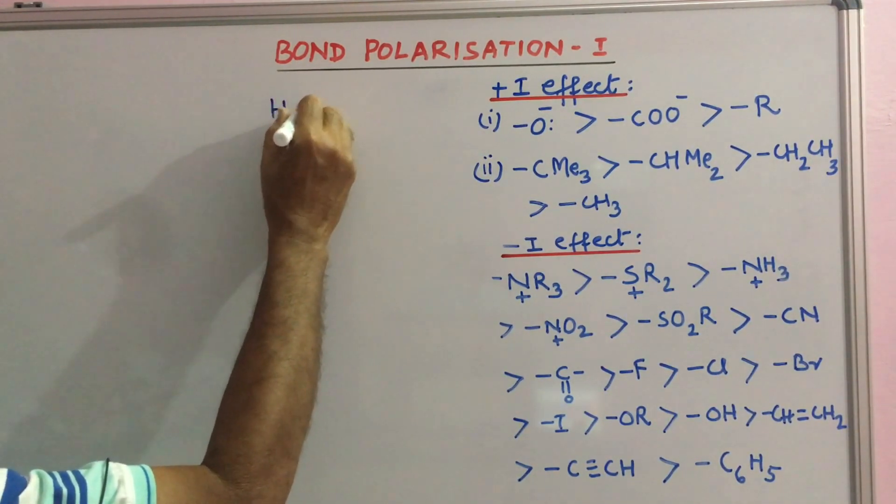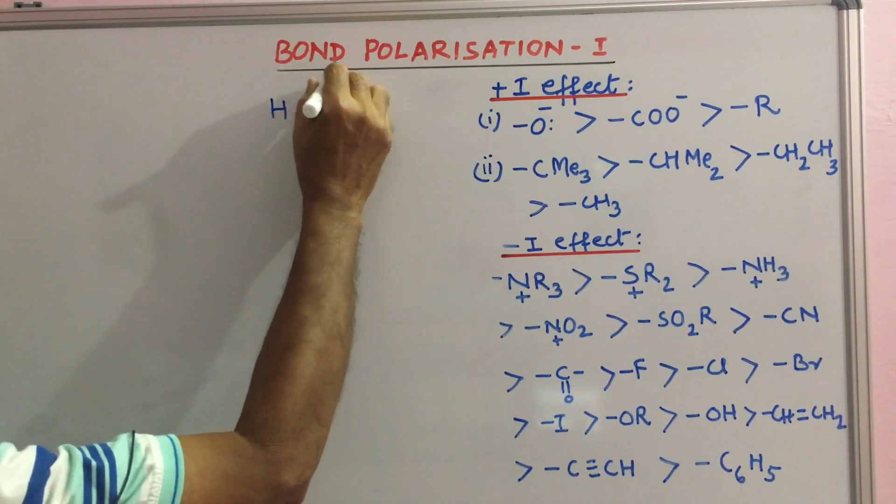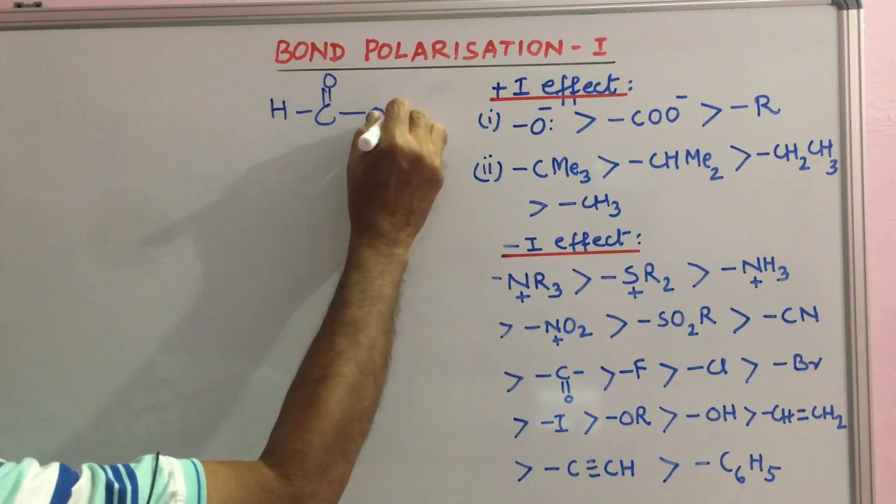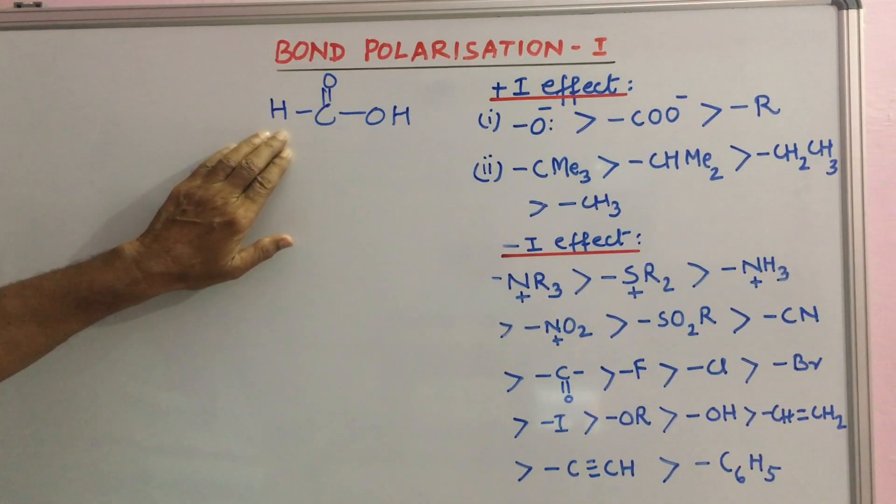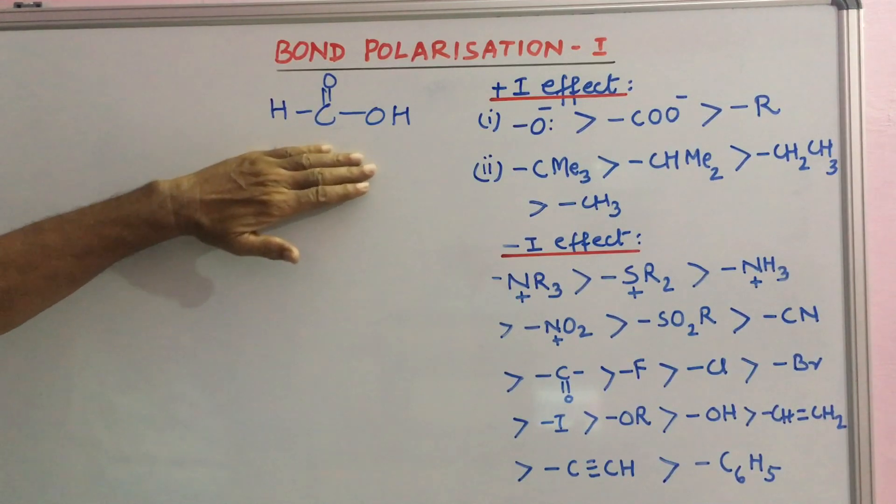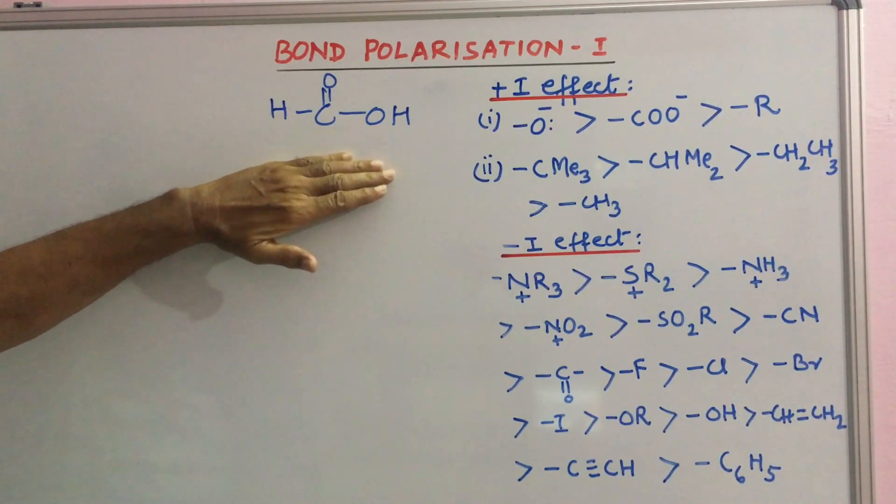Formic acid. H has zero I effect, you must note. So in formic acid, if you compare this with other acids, you put a CH3 here.